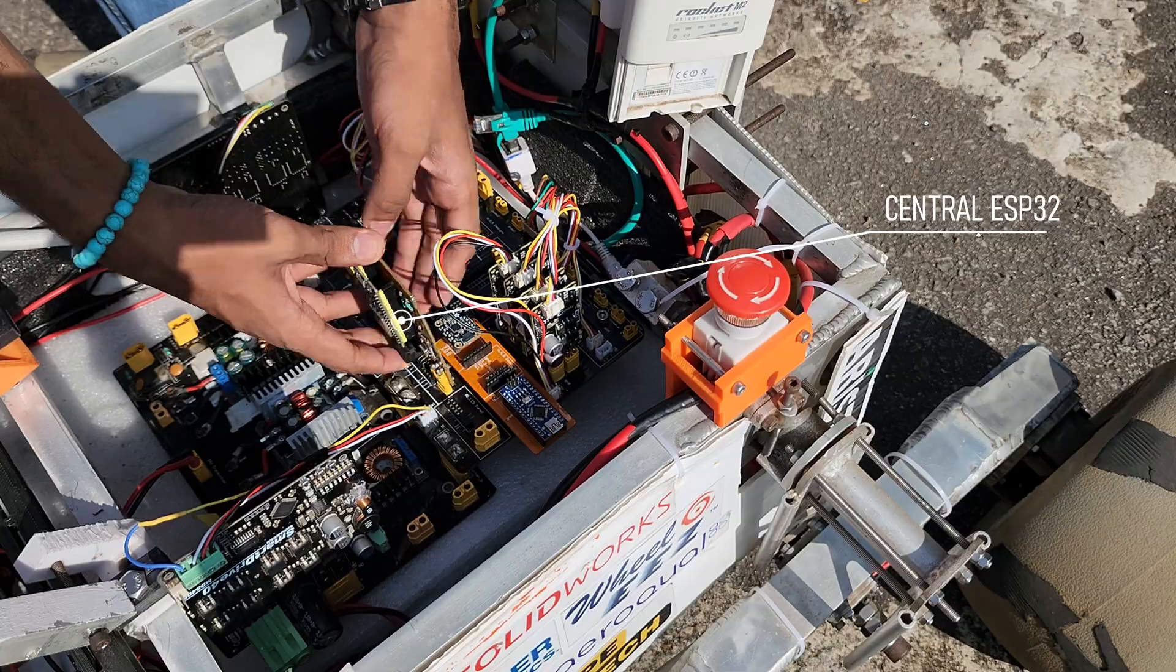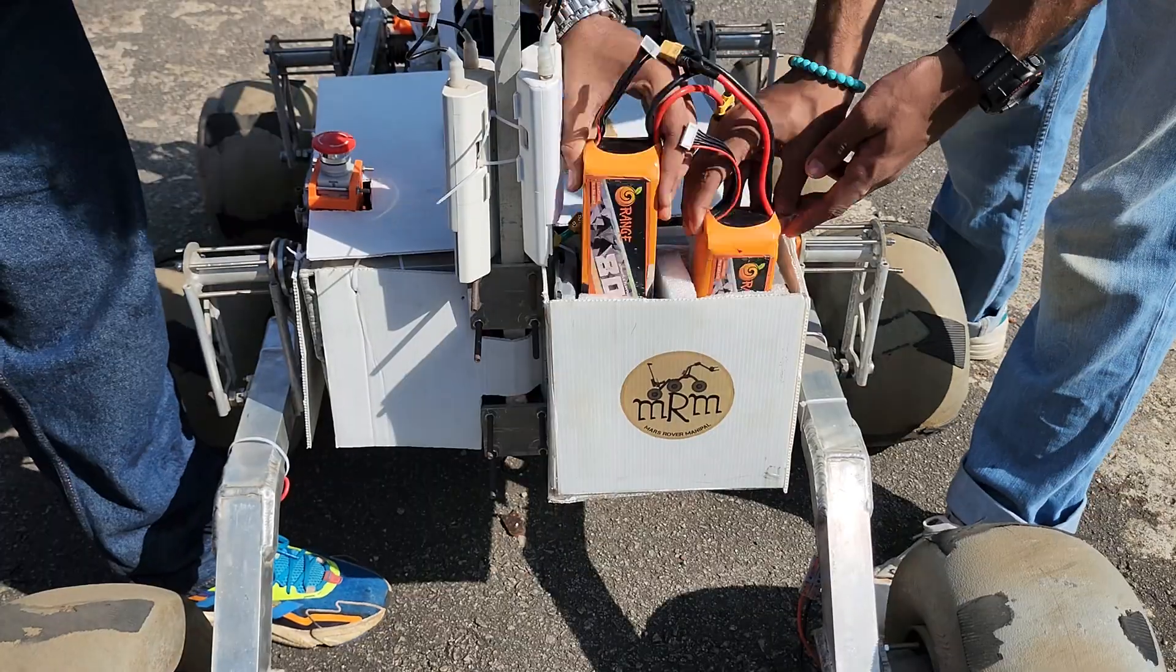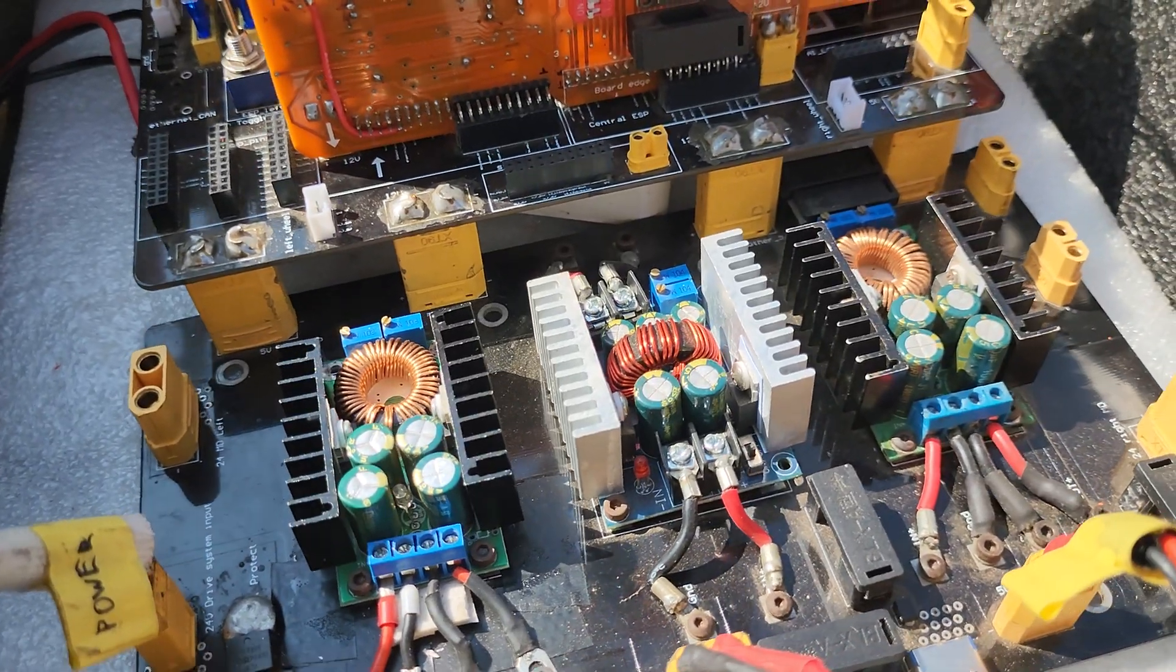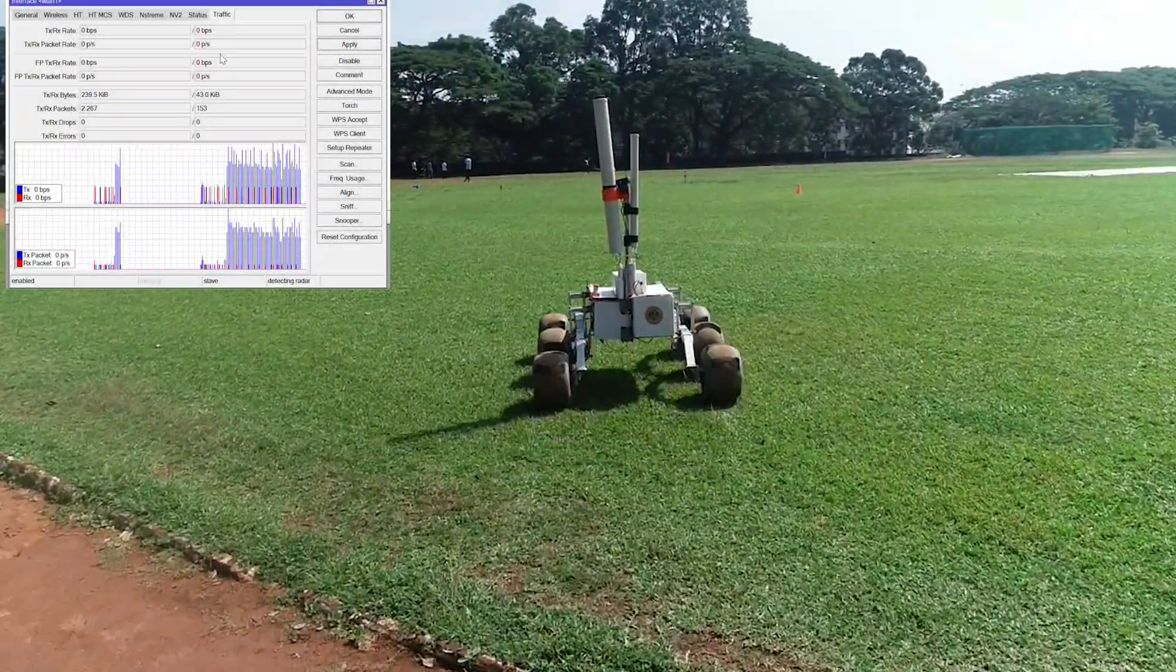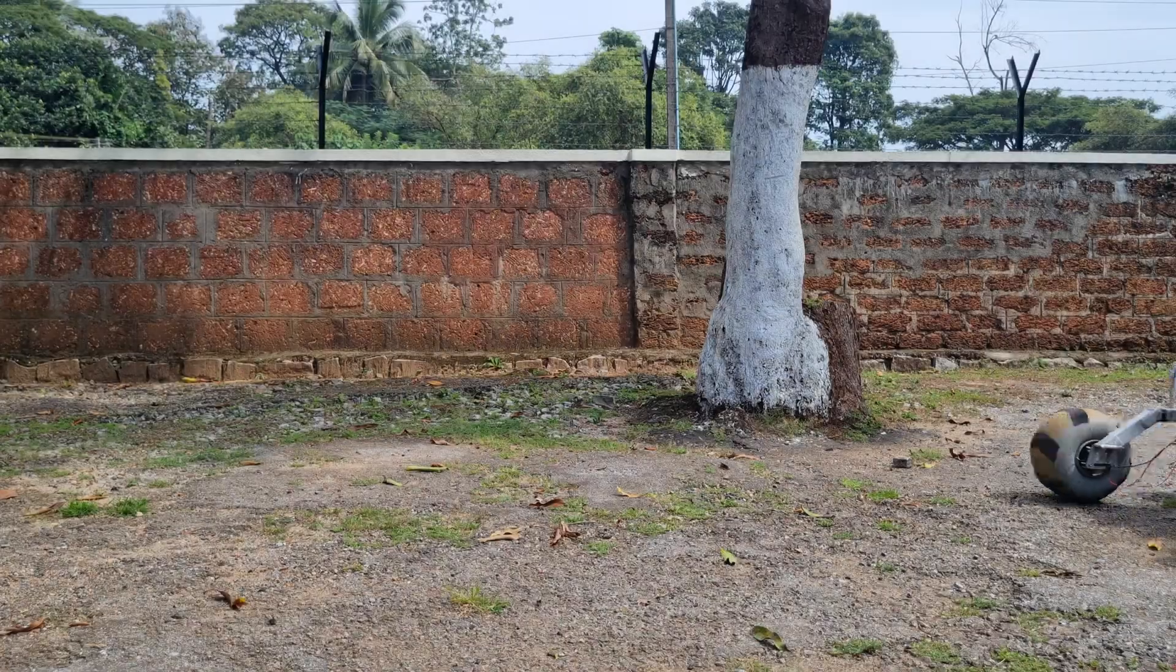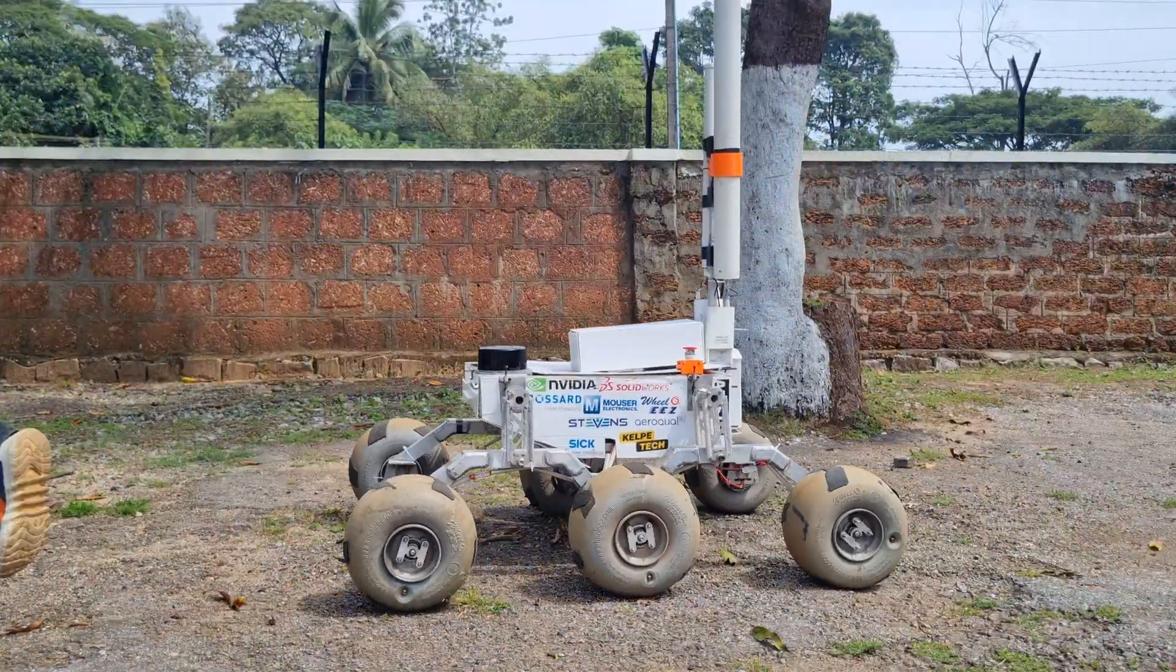The rover's control system uses the ESP32 microcontroller, powered by LiPo batteries which is stepped down by a power distribution board. We use omnidirectional antennas, utilizing 2.4 and 5 GHz frequencies with LoRaWAN as a backup. An accessible kill switch is employed for emergency shutdown of the rover.